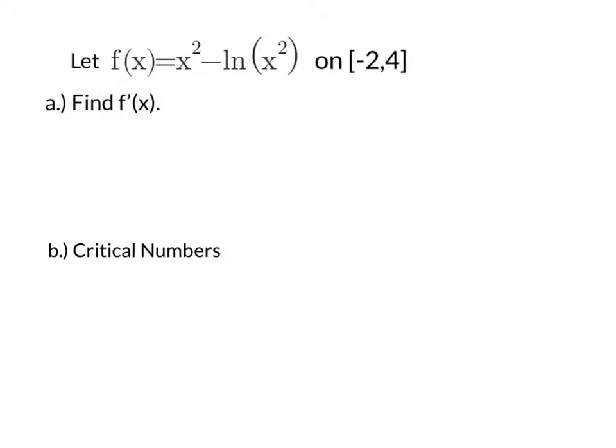Let's let f of x equal x squared minus the natural log of x squared on the closed interval from negative 2 to positive 4. Now first we're asked to find the first derivative.